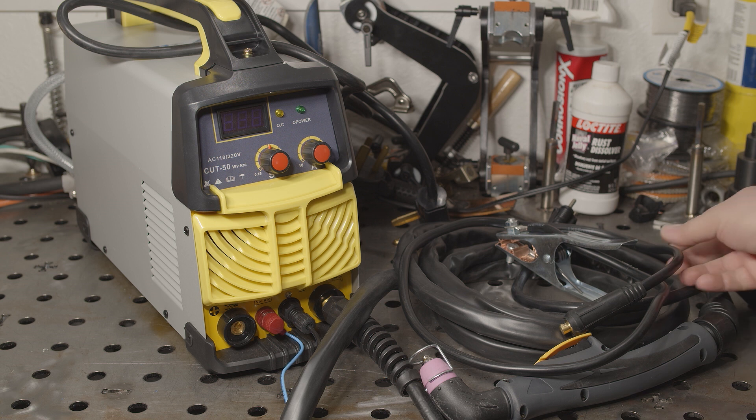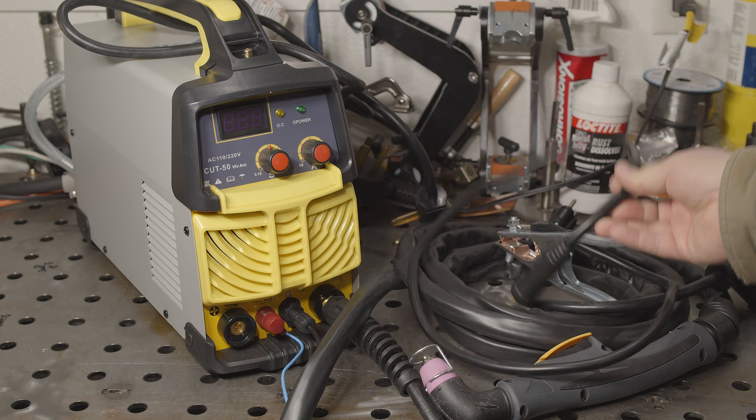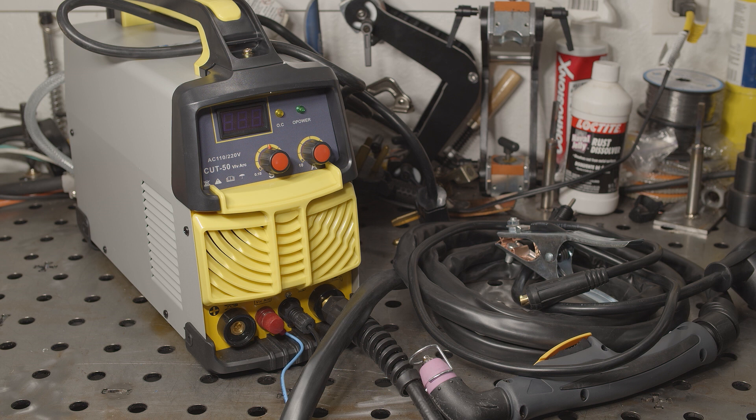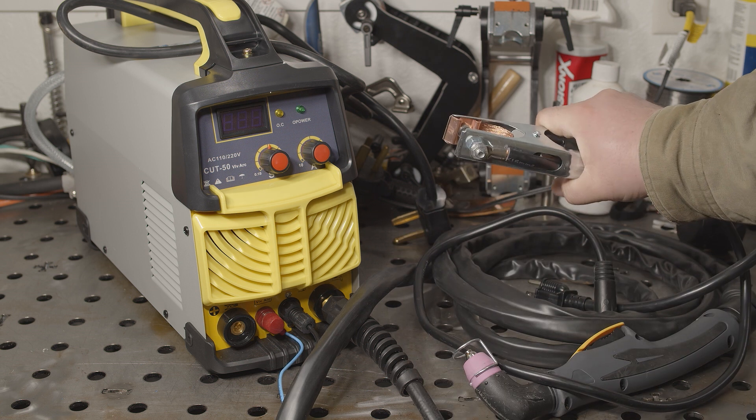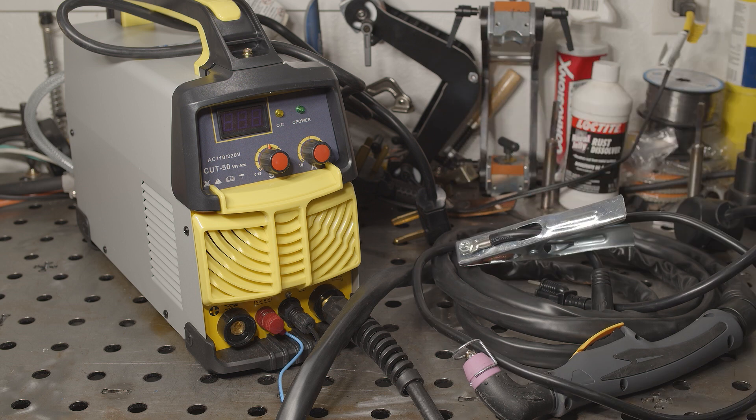The work clamp cable is just stupid short, like four feet long. Luckily, the torch cable is much longer, but as it comes, you will have to be pretty close to an outlet or use an extension cord, because unfortunately the power cord is also just over four feet long. The work clamp itself is pretty cheap and flimsy, but it'll work fine.